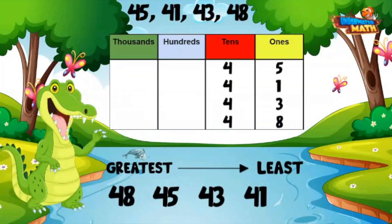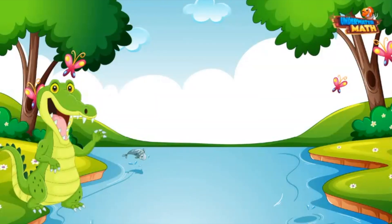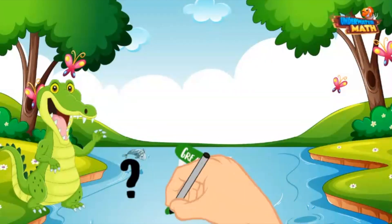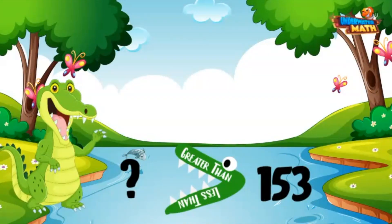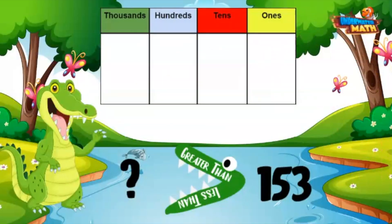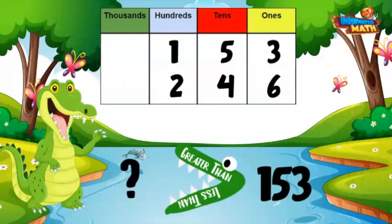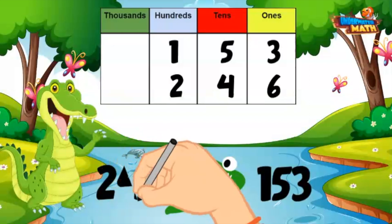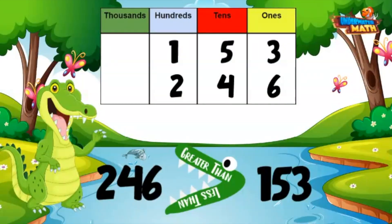Now our numbers are in order from greatest to least. I can also generate my own numbers that are greater than or less than a given number. Let's find a number that is greater than 153. We can use our trusty place value chart to help. I can see that 153 has 100. If I create a number with more hundreds than this, it will be greater. How about 246? 246 is greater than 153 because it has more hundreds.